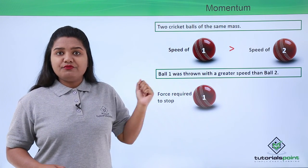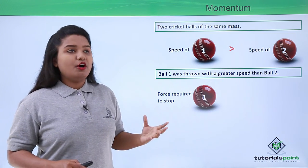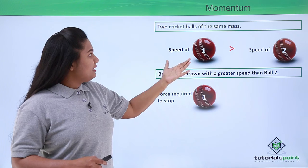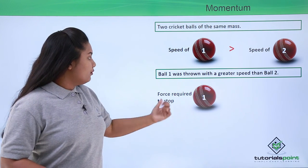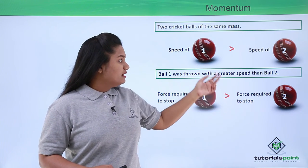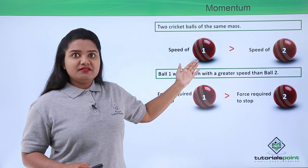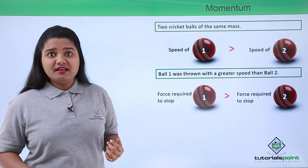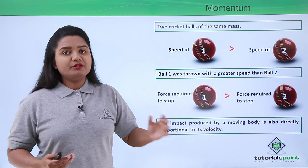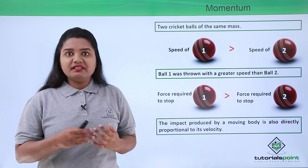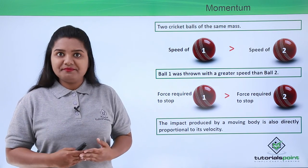When we want to stop these two balls, the force required to stop the first ball will be much more compared to the force required to stop ball number two, because the speed of the first ball is greater. So the force required to stop the first ball is more, and we conclude that the impact produced by a moving body is also proportional to the velocity of the moving body.